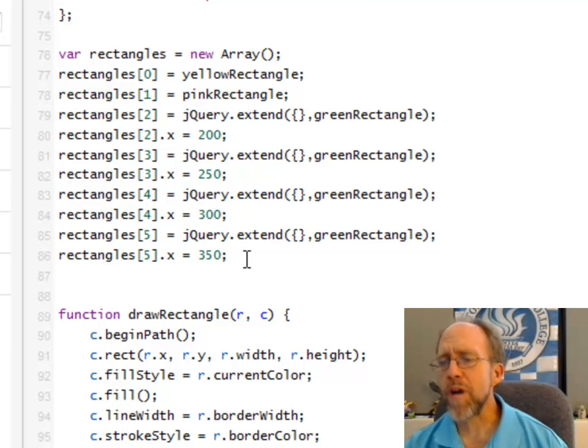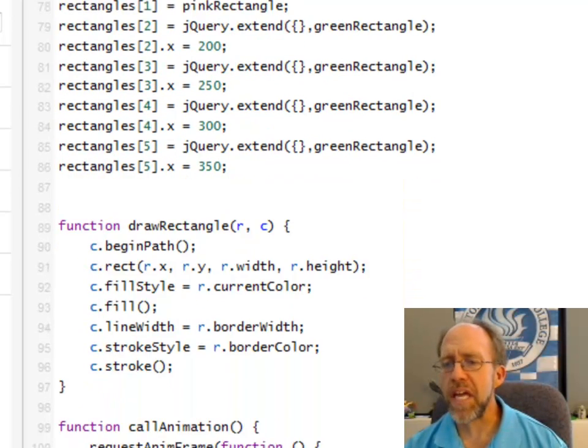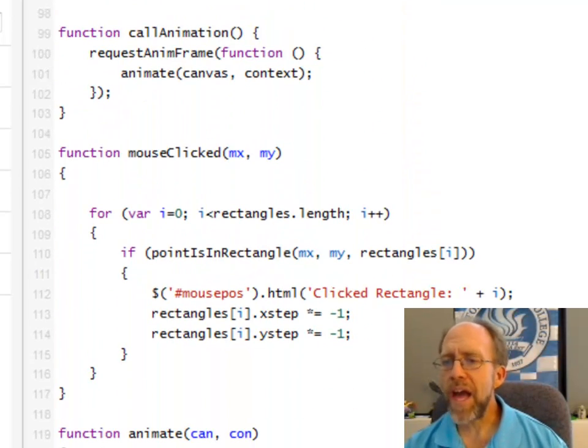Now, a lot of times in game programming, you'll do something like called a rectangle generator, where it simply can generate a new rectangle all the time, and that would be a function. Okay, so, as you can see, that's one of the things that you can do in JavaScript, and built into jQuery is this extend.